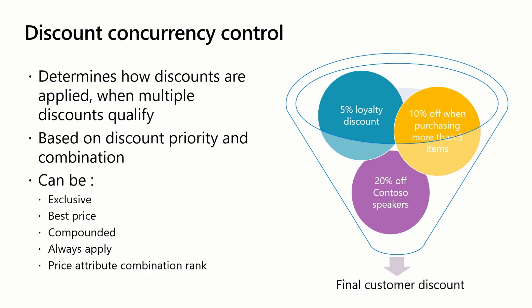When more than one discount is found for an item, the discount concurrency mode provides a set of rules for determining how these are applied. Exclusive discount, as the name implies, cannot be combined with any other discounts — in the case where multiple exclusive discounts are found, the highest discount will be applied. Best price discount will consider multiple discounts and ensures that the best price for the customer is applied. Compounded discount allows for multiple discounts to be applied, and you can define how the compounding is applied — based on the original price or the already compounded amount. Always apply discounts ensure that the discount will always be applied irrespective of other discounts and are always applied last in the sequence. Price attribute combination rank discounts don't compete based on price, but rather based on which discount has the highest rank within a price component code. Where there are multiple discounts at the same highest rank, all are applied.